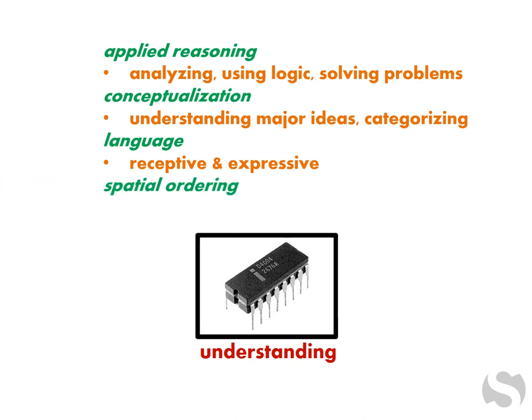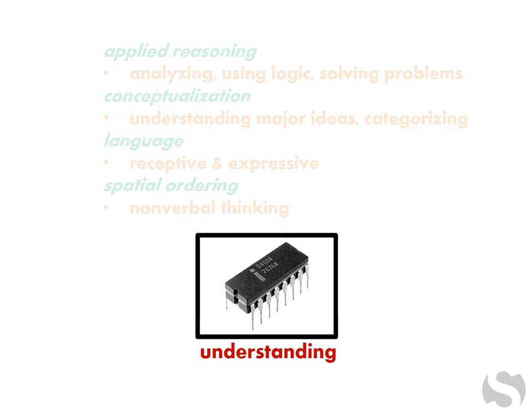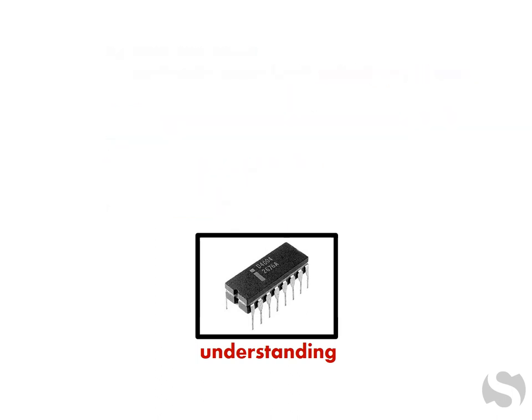Spatial ordering refers to nonverbal thinking, or thinking without words. This includes interpreting and generating visual-spatial materials like diagrams and artwork. Math and science have many ideas and processes that are nonverbal, such as area and gravity.